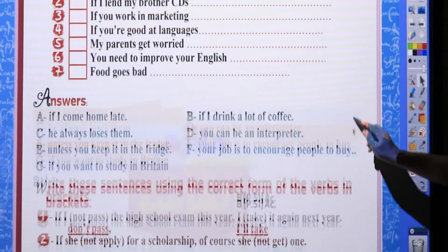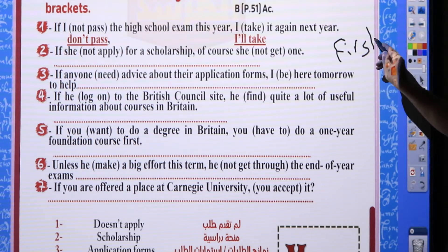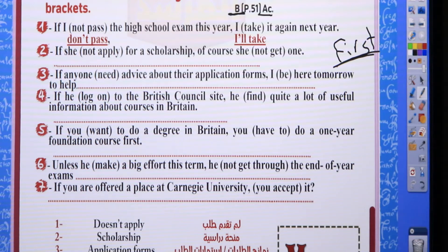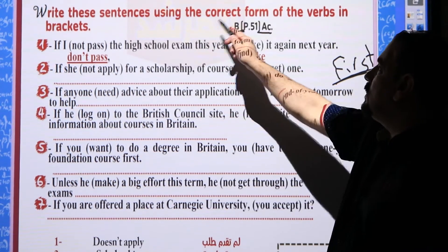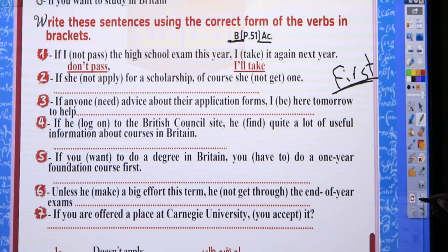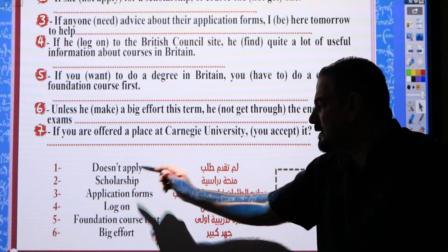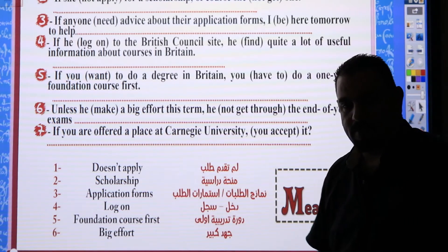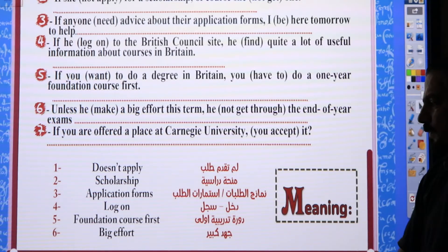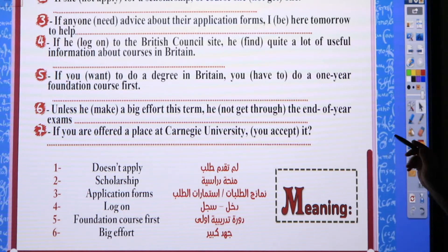Now let's move to the next exercise from the textbook, which is specifically about the first conditional. Before reading the exercise, let me highlight some difficult vocabulary: 'doesn't apply' means did not submit an application; 'scholarship' means منحة دراسية; 'application forms' means استمارات الطلب; 'log on' means التسجيل الدخول; 'foundation course first' means دورة تدريبية أولى; 'big effort' means جهد كبير. Write sentences using the correct form of the verbs.